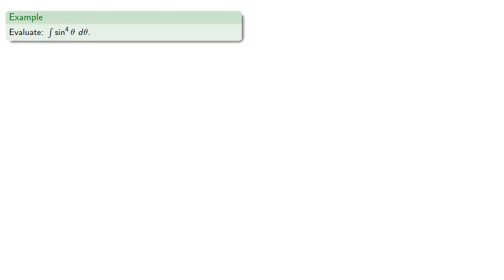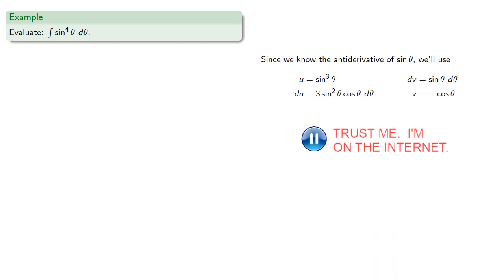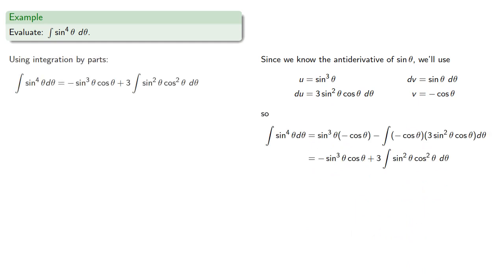Or let's try the integral of sine to the fourth. Since we know the antiderivative of sine theta, we'll make the choices for u and dv, differentiating and integrating. And so integration by parts will give us...